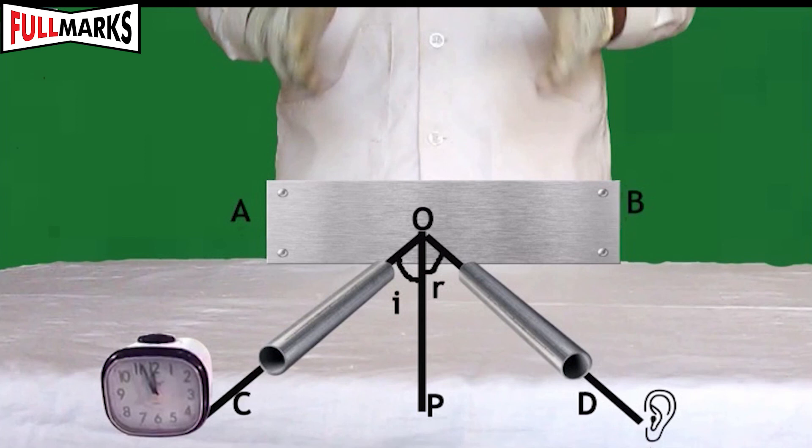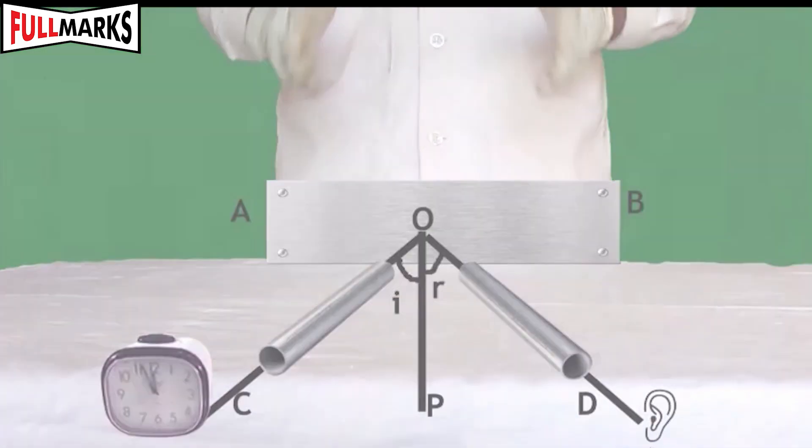Mark the position of the tube when it collects the clear and maximum reflected sound. Draw the line of reflected sound wave and mark it as OD. Measure the angle of incidence and the angle of reflection. Follow the above procedure and record your observations.